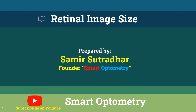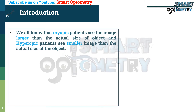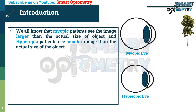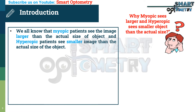Today, I will discuss about retinal image size. Why does a myopic patient see a larger image and a hyperopic patient see a smaller image than the actual size of the object? We know that myopic patients see the image larger than the actual size of the object and hyperopic patients see a smaller image than the actual size of the object. But the question is, why does myopic see larger and hyperopic see smaller?